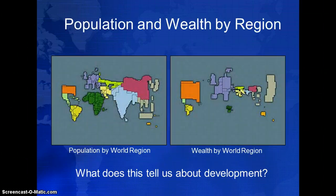Here we see two cartograms. The one on the left shows world population by region. The one on the right shows world wealth by region. Note the differences between the two. Africa and South Asia figure prominently on the cartogram on the left, but virtually disappear from the one on the right. What does this suggest about development?